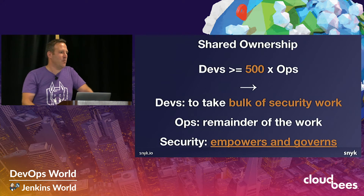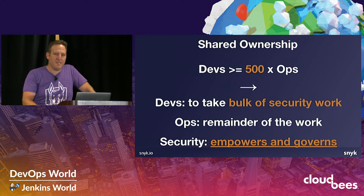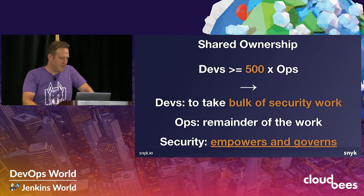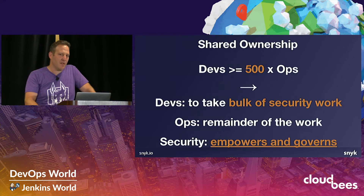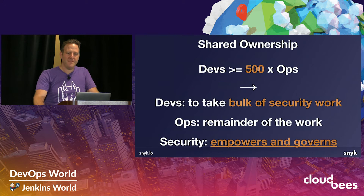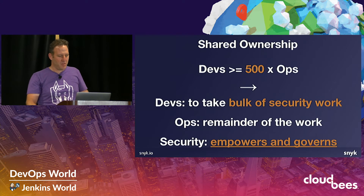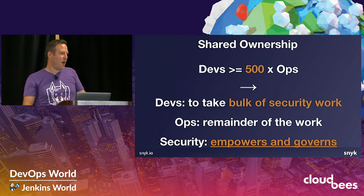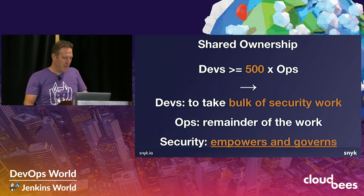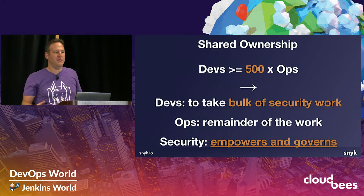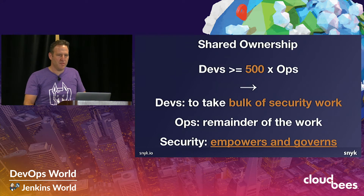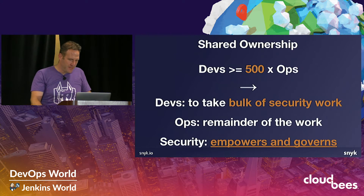We believe the only way to truly get DevSecOps at the speed of DevOps is to get developers and ops to embed security into their regular processes. For most companies we work with, we observe there are roughly 500 developers for every ops person and for every security person. This means the devs need to take the bulk of the security work, ops take the remainder, and the security team is left to empower and govern what those two teams do by dialing the knobs of the various security tools.